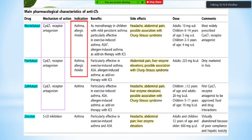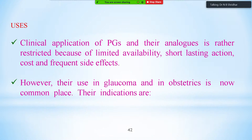Zileuton is a 5-lipoxygenase inhibitor used in asthma, effective in exercise-induced and allergy-induced asthma. Side effects are similar to other leukotriene drugs but zileuton causes hepatic toxicity, so it is not commonly used. Clinical use of leukotriene antagonists is also restricted due to limited availability and anaphylactic reactions.